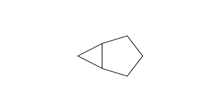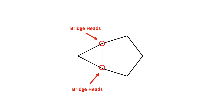In this online lecture we are going to learn how bicyclic bridged compounds or bicyclic fused compounds are made. Let's first look at what bridged compounds are. If two ring systems share two or more than two carbon atoms in common, they are called bridged compounds. The carbon atoms which are common in both rings are called bridge heads.